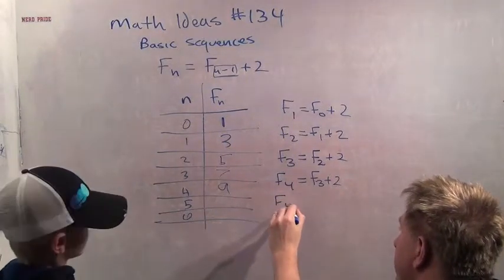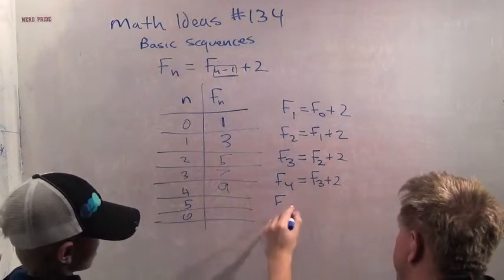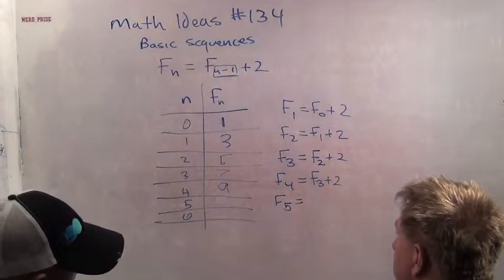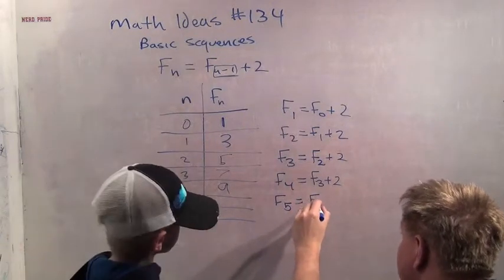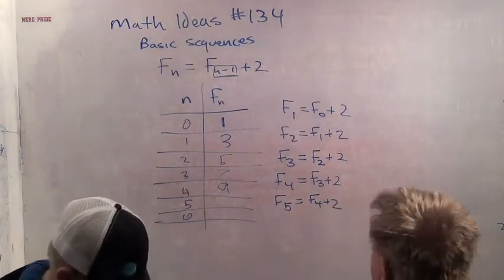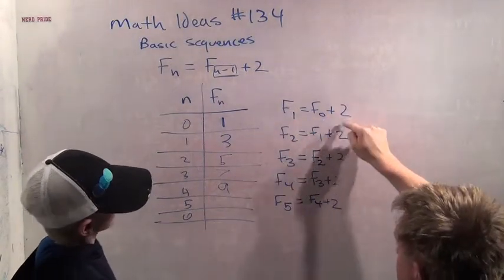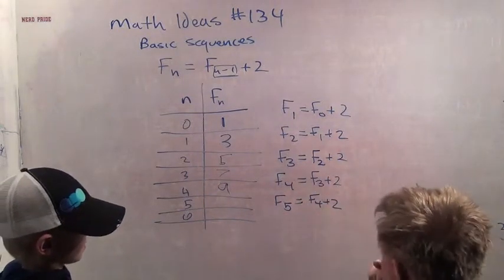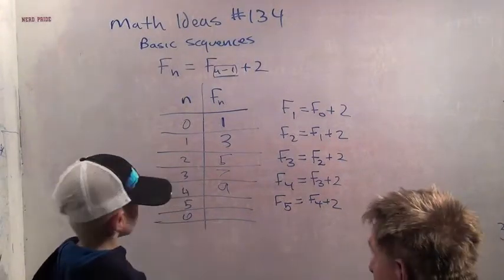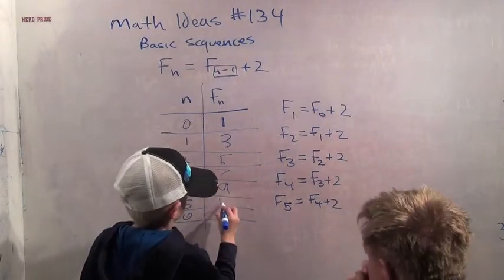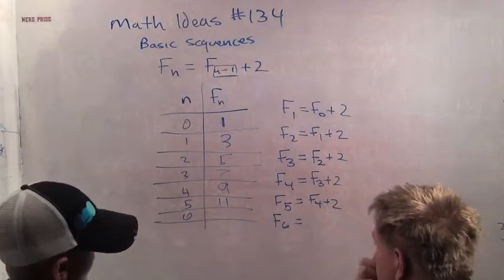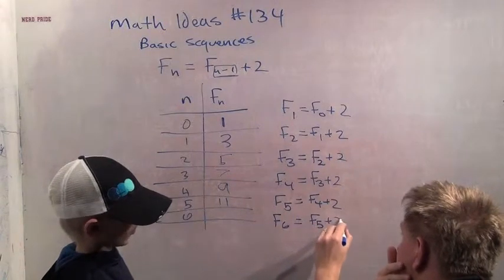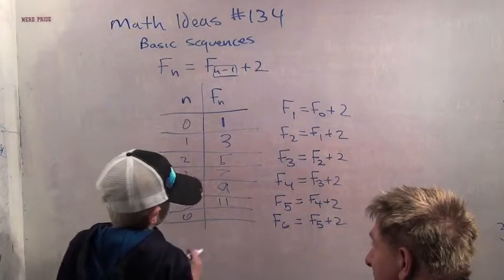How about F5? What's going to be the formula for F5? F5 equals F sub 4 plus 2. Very good. F5 equals F4 plus 2. And see, it always was the one before it. F1 was F0 plus 2. F2 was F1 plus 2. F3 was F2 plus 2. F4 was F3 plus 2. F5 was F4 plus 2. So what is F4 plus 2? 11. And what's going to be our formula for F6? F6 equals F5 plus 2. And what is F sub 5 plus 2? 13.